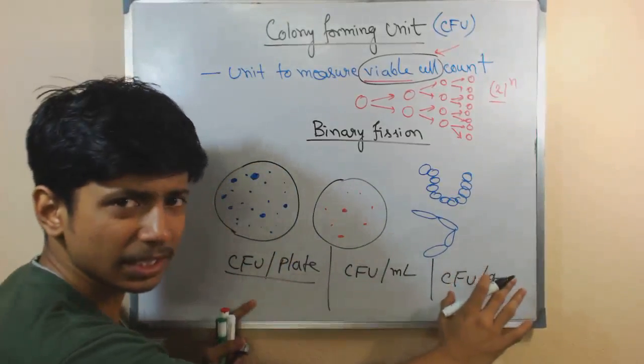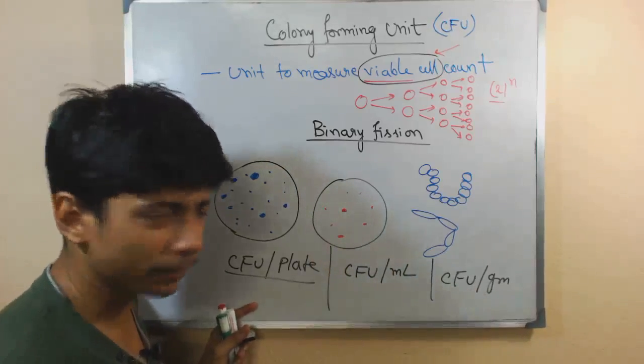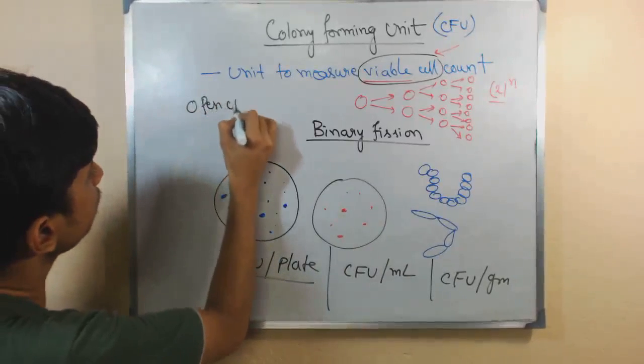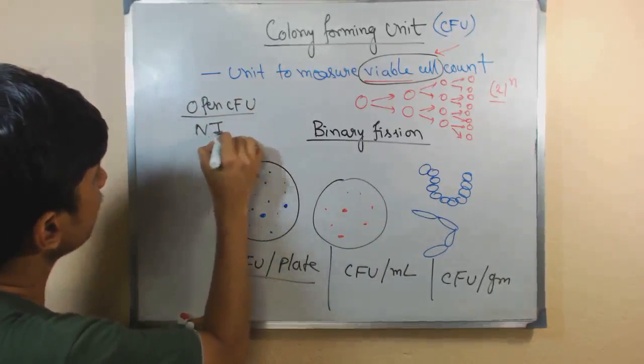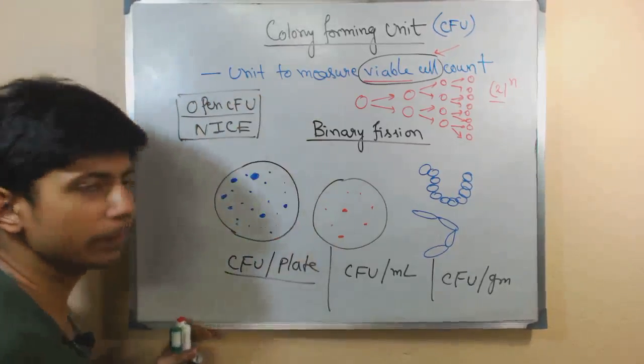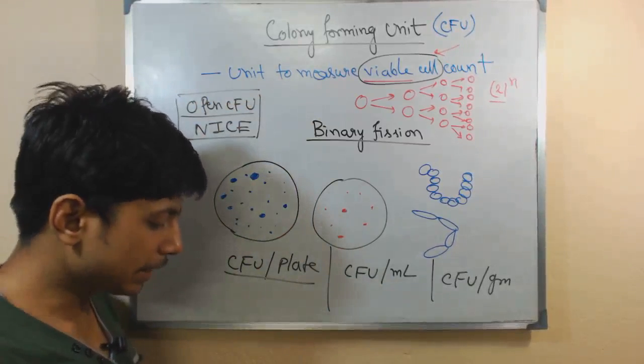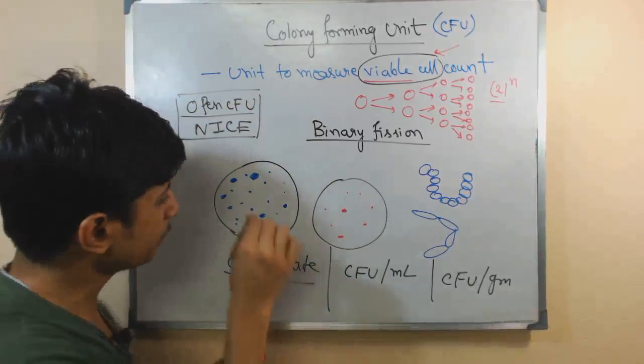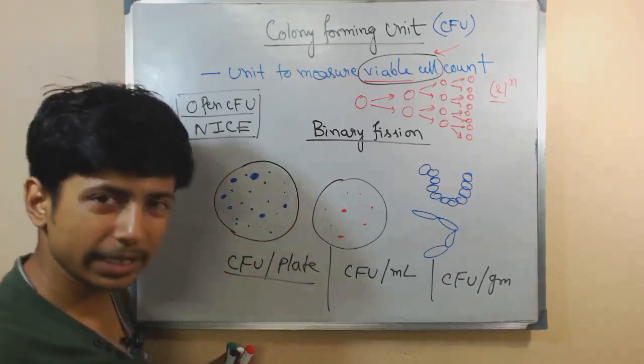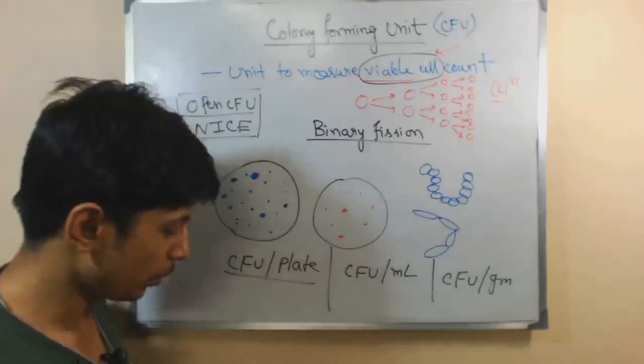We have all these ideas—we can measure this. There are different machines out there to measure all these, different software out there. One of them is called OpenCFU, one of them is called NICE. These are software now available for counting the Colony Forming Unit. Previously, what we would do is check each of these colonies and count them manually.